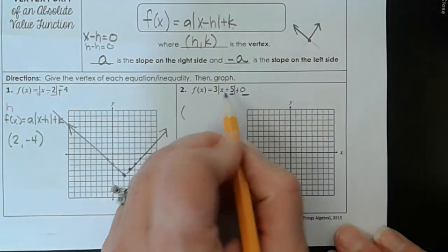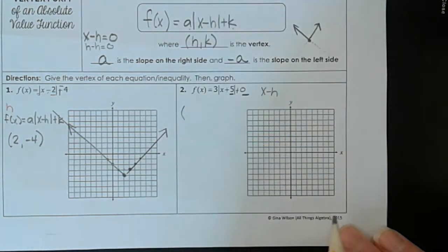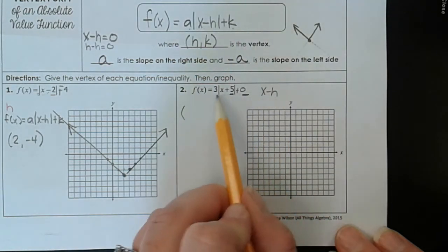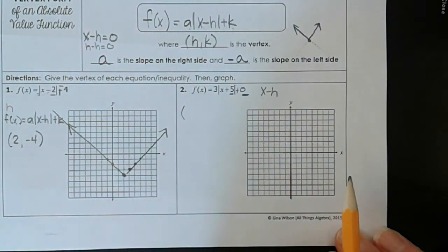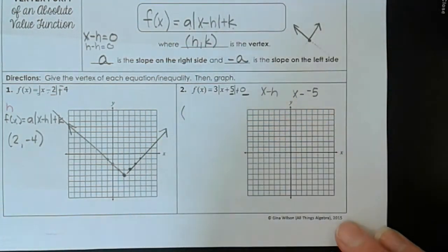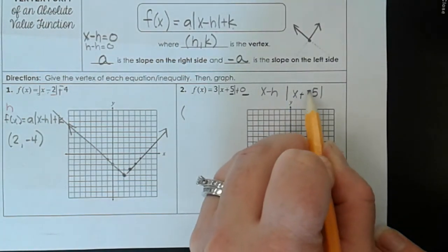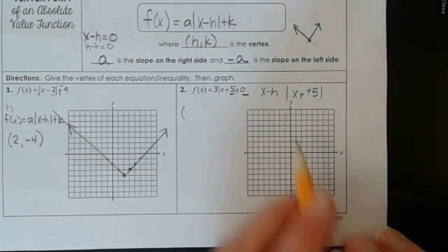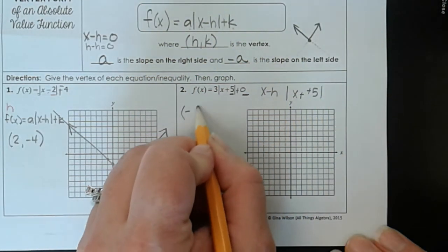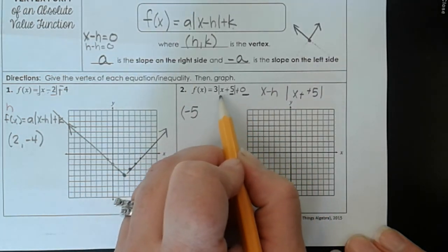So h, well remember our vertex form is x minus h. So if we want to try to get x, x minus h equals x plus 5. Well what we really need here then is x minus a negative 5, because then that turns into x plus 5. So our h is the negative 5, because we have to say x minus negative 5 gives us x plus 5.